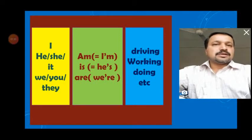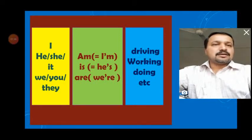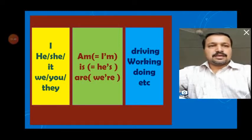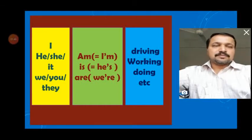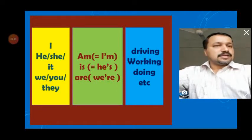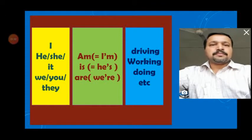If you want to make these sentences negative, you add 'not' between 'am,' 'is,' or 'are' and the main verb. For example: I am driving → I am not driving; he is driving → he is not driving; we are driving → we are not driving, or 'we aren't driving'; she isn't driving — that is the shortest form used in speech.